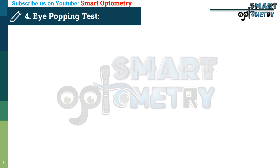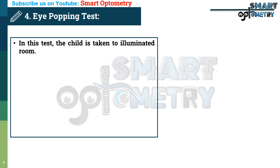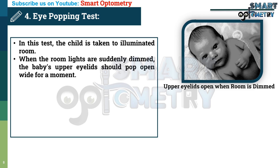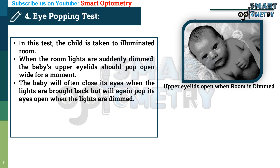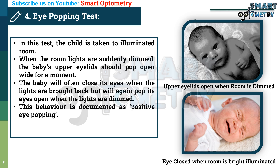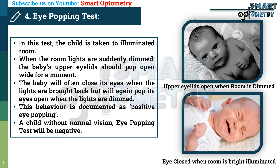Eye-popping test: In this test, the child is taken to an illuminated room. When the room lights are suddenly dimmed, the baby's upper lids should pop open wide for a moment. The baby will often close its eyes when the lights are brought back but will again pop its eyes open when the lights are dimmed. This behavior is documented as positive eye-popping. A child without normal vision will have a negative eye-popping test.